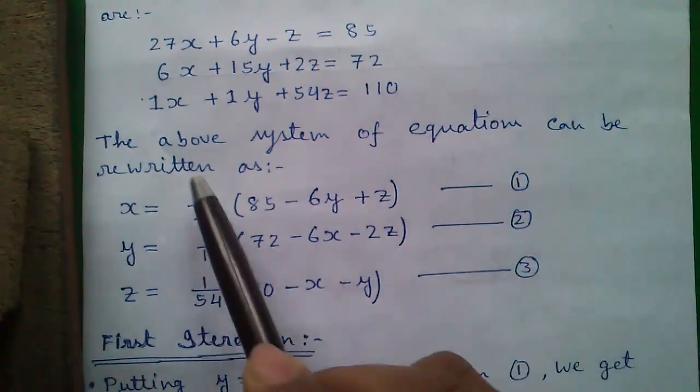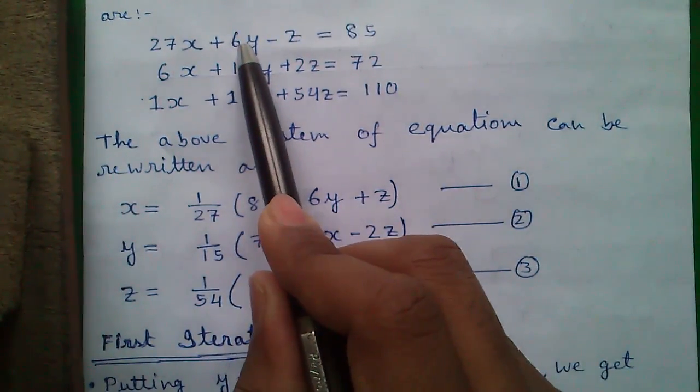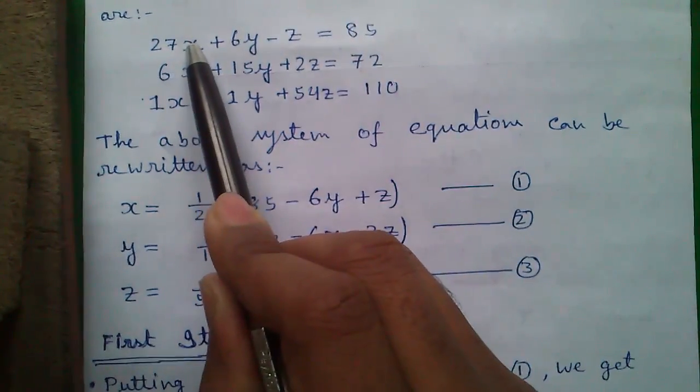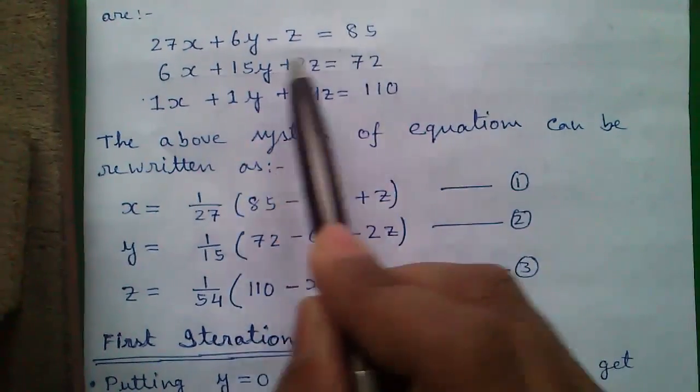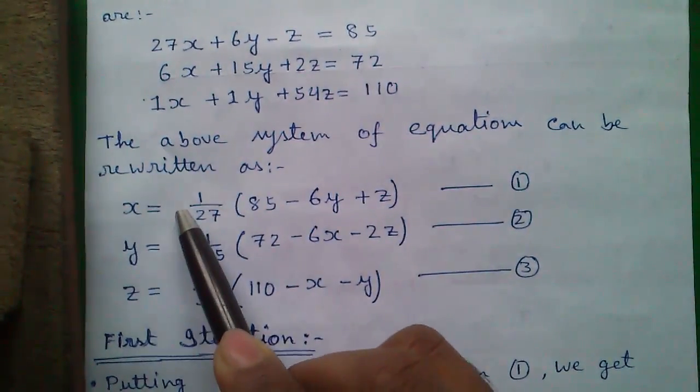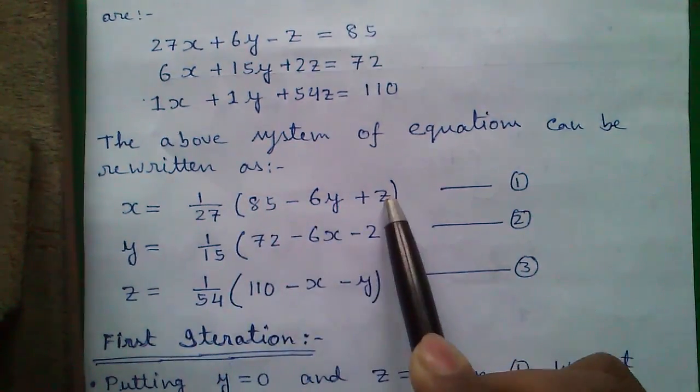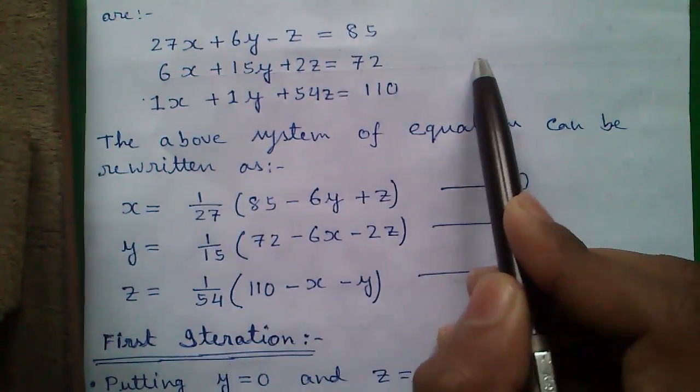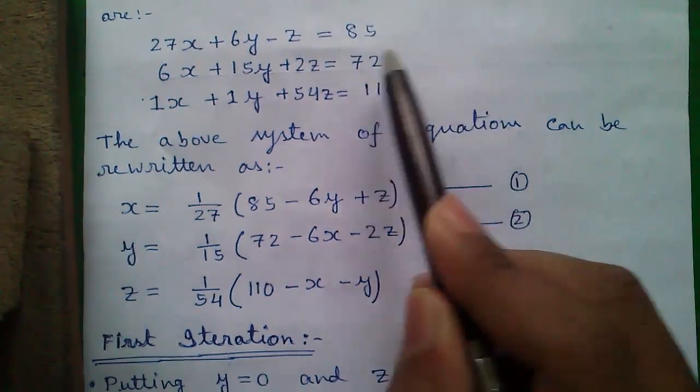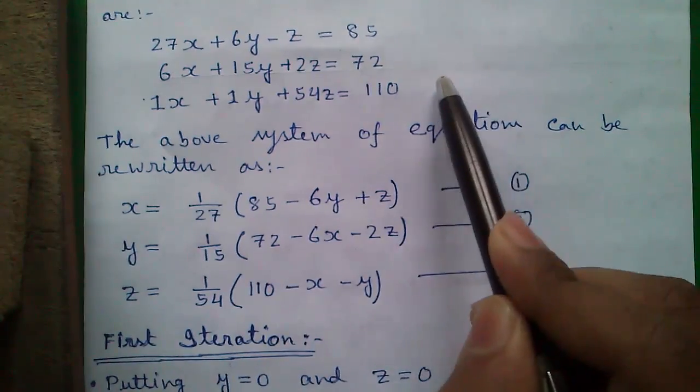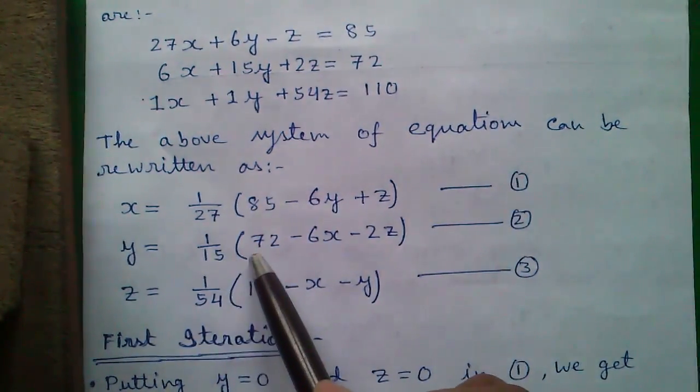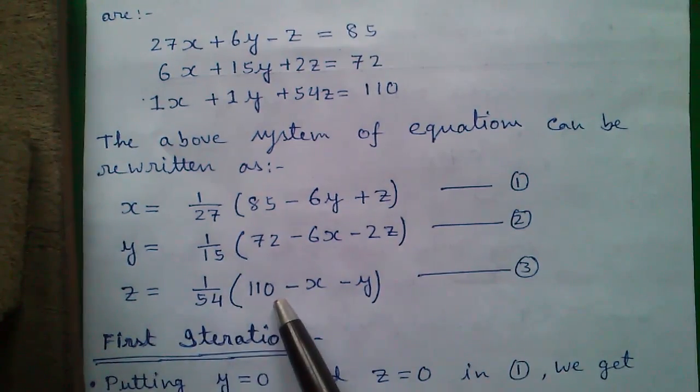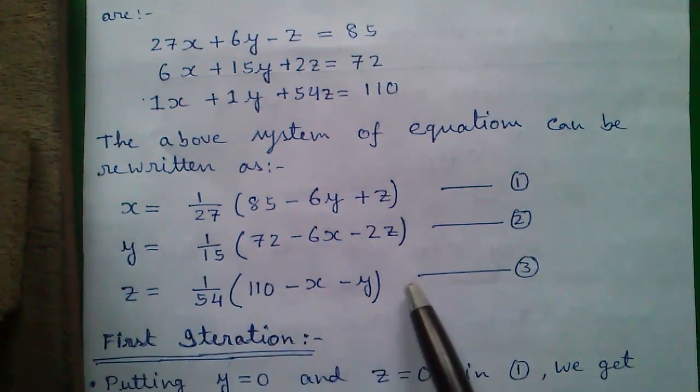The above system of equations can be rewritten as: if we transfer 6y and minus z to right hand side it becomes 85 minus 6y plus z equals 27x, and dividing by 27 gives x equals 1 by 27 into 85 minus 6y plus z, which is equation 1. Similarly y equals 1 by 15 into 72 minus 6x minus 2z, equation 2. Similarly z equals 1 by 54 into 110 minus x minus y, equation 3.